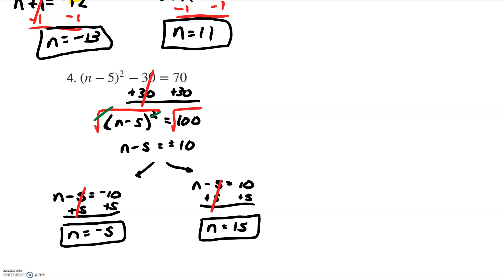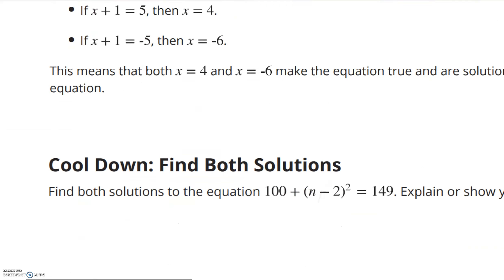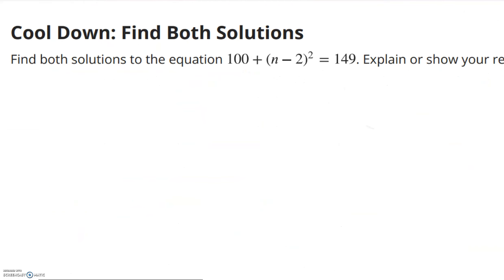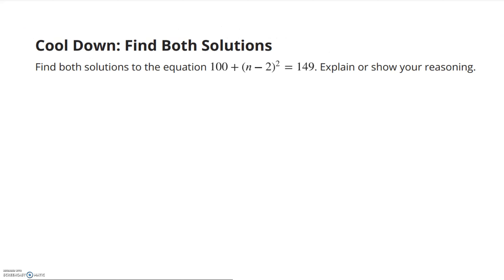That's pretty much it for solving with square roots — that's really as difficult as it gets. Notice that all of my solutions are integer values, but it's okay if when you take square roots you get decimals; it's just both positive and negative whatever that decimal value is. If you scroll down, I have the cooldown. I would like you to find both solutions to that equation — show your work, please.